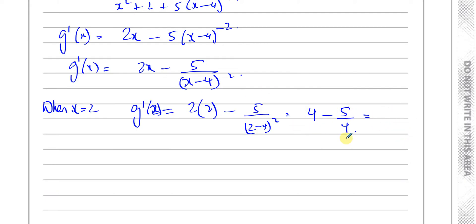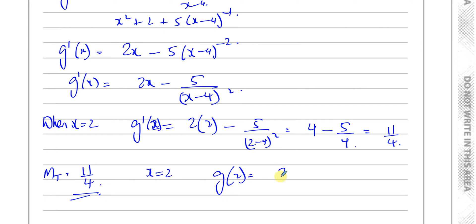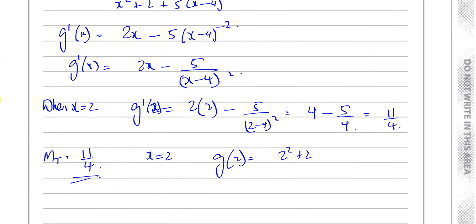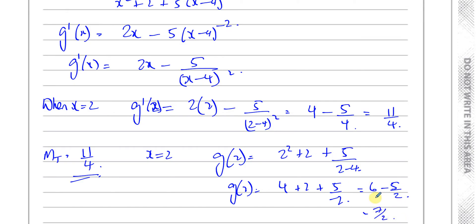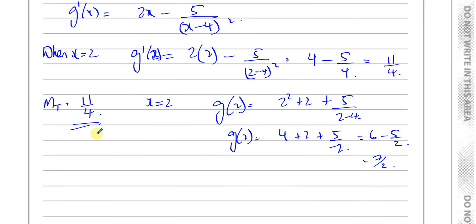That's going to be 16 over 4 minus 5 over 4, which is 11 over 4. So the gradient of the tangent is going to be 11 over 4. And we need to know the coordinate of when x equals 2 — we've got to find what g(2) is. g(2), taking the function, you've got 2 squared plus 2 plus 5 over 2 minus 4. That's 4 plus 2 plus 5 over minus 2, which is 6 minus 5 over 2, which is 12 over 2 minus 5 over 2, which is 7 over 2.